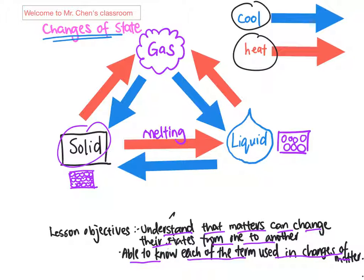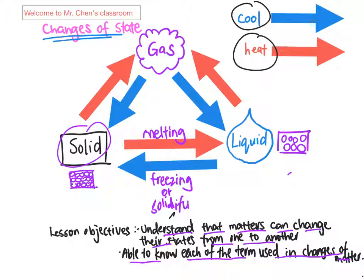That's how ice actually melts and turns into water. However, the process can go the other way as well. So when water, which is liquid, loses heat — which is cooling — it is actually able to form ice, which is a solid. That process is called freezing, or what we call solidification.